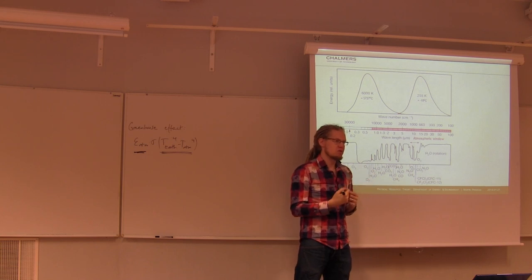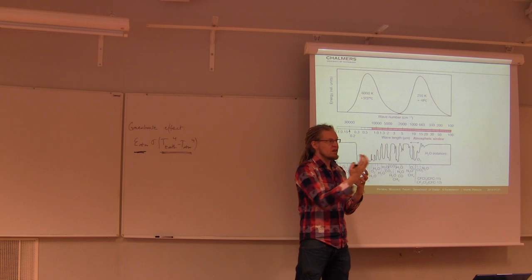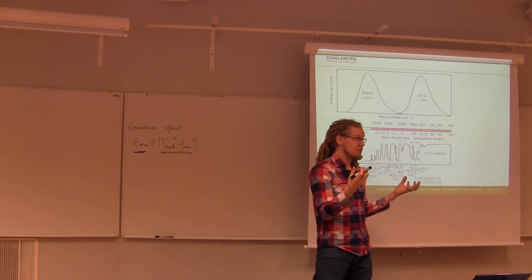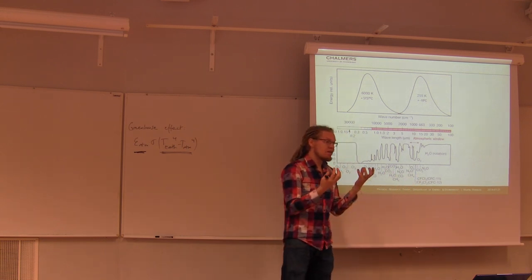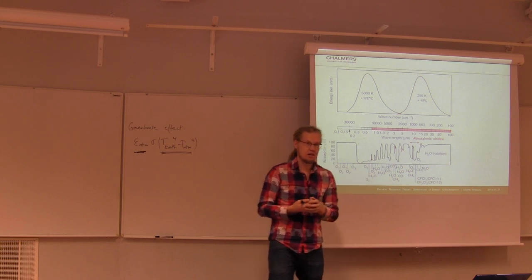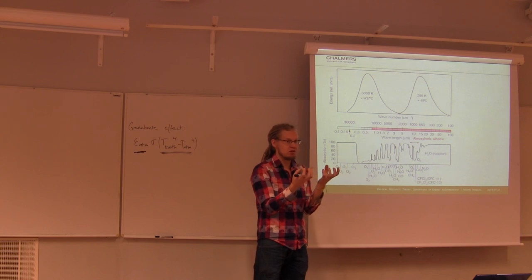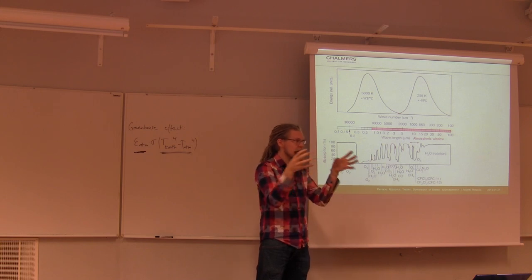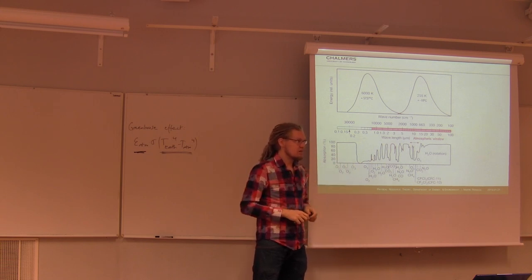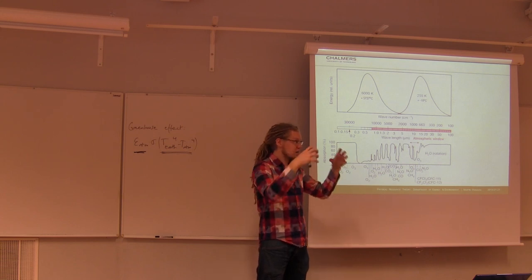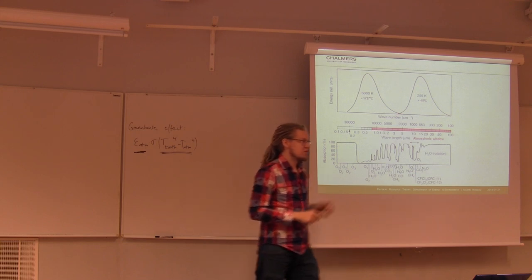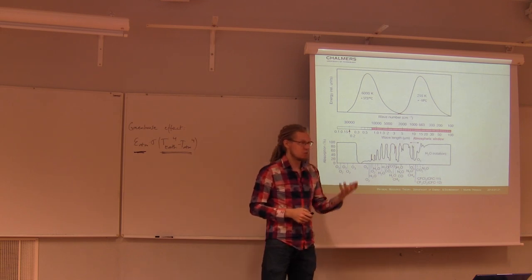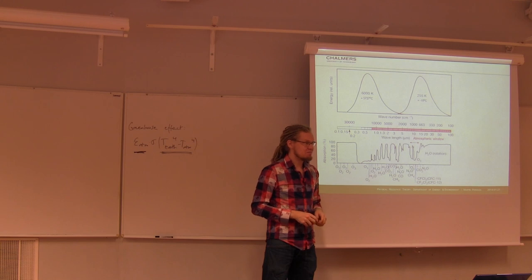In order for radiation to be absorbed, you need some shift in asymmetry in the electric potential — you need a dipole, a slight shift in the electric charge. Both oxygen and nitrogen are completely symmetrical — it's two oxygen atoms or two nitrogen atoms sitting together, so you don't have any asymmetry. Even when the molecule vibrates, it stays totally symmetrical. So you don't get that dipole shift in the electric charge.